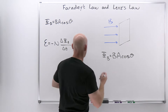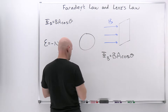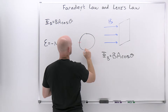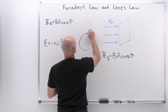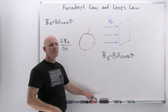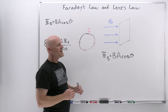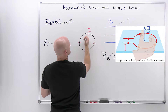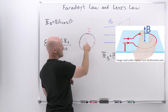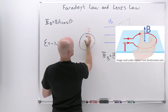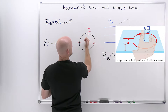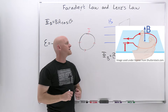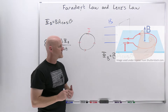A quick review: if we've got a loop of wire with a current going around it, we developed a right-hand rule that says if you loop your fingers in the direction of that current, then where your thumb points is the direction of the magnetic field generated coming out the center of that loop. In this case, this is going to generate a magnetic field coming out of the board at the center of the loop.